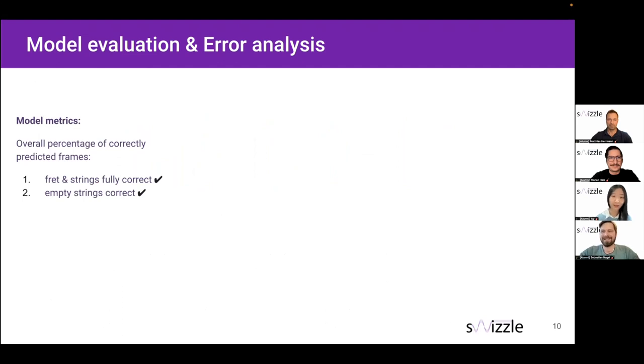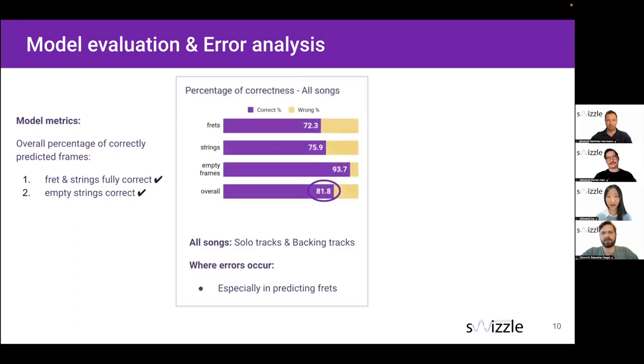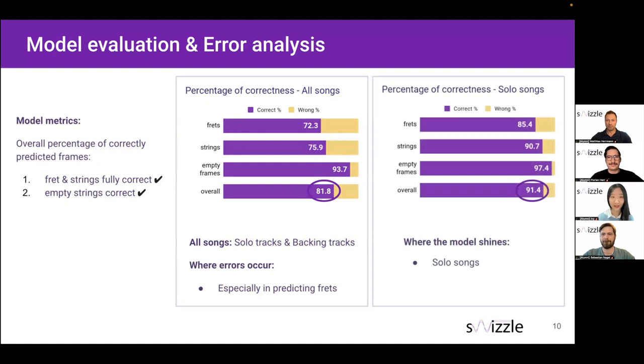So here, to evaluate how correct we are with the output tabs, we come up with our own metrics, the percentage of correctly predicted frames. We look at the predictions by fret and by string and count the cases only when both are correct. And then there's a second scenario when there is no note played, and then we count the cases where we correctly predict the empty frames. So if we feed all the audio data, including the solo tracks and the backing tracks into the Swizzle model, we achieve the overall correctness of 81.8%. And if you look into the chart shown here, the error occurs more in the predicting frets.